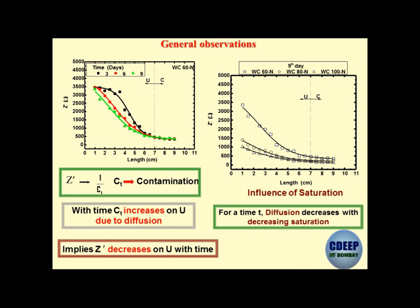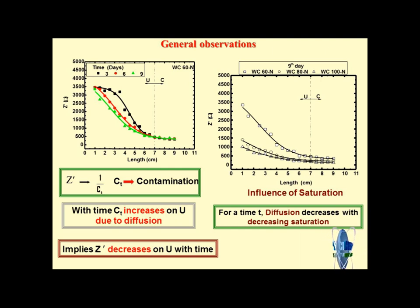This is a very interesting way of showing how contaminant diffusion takes place in the porous system over time. One of the interpretations of these graphs is that they are breakthrough curves - a breakthrough curve could be with respect to length or with respect to time. The axis Z' is inversely proportional to concentration, so Ct/C0 can be written in the form of Z'_0 upon Z' at a given time.